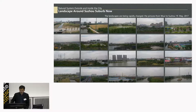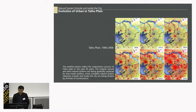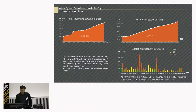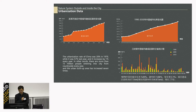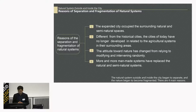But the landscape is being changed rapidly right now. These are pictures outside of Suzhou I just took from the high-speed train last month. The satellite photos reflect the urbanization process of the Taihu Plain in the past 30 years. The urbanization rate of China was 20% in 1979, while it was 55% last year, and it increases by 1% every year. In other words, more than 50 million people are entering the city from rural areas annually. The natural system outside and inside the city began to separate, and nature began to become fragmented.